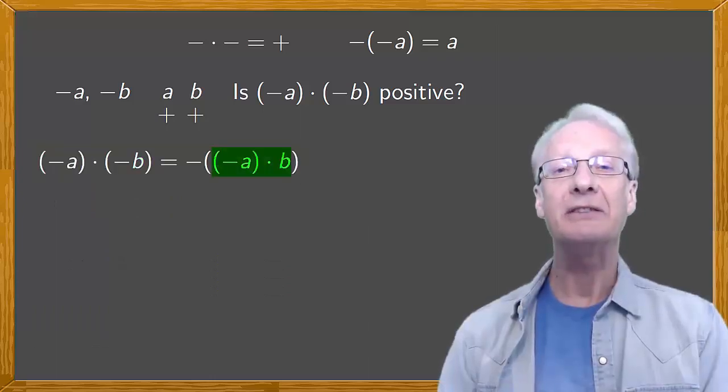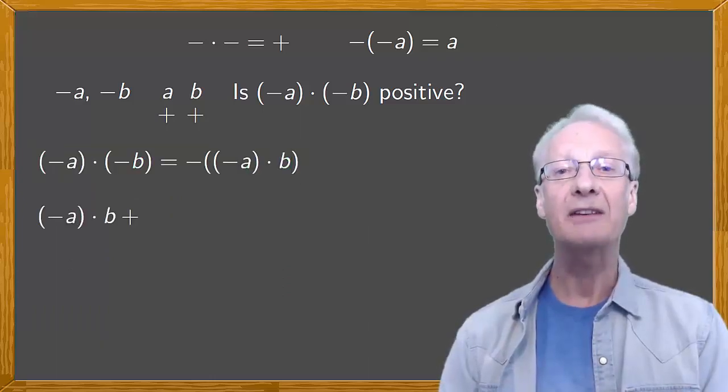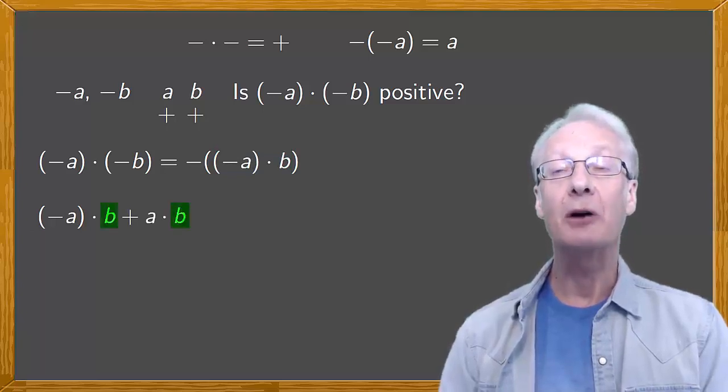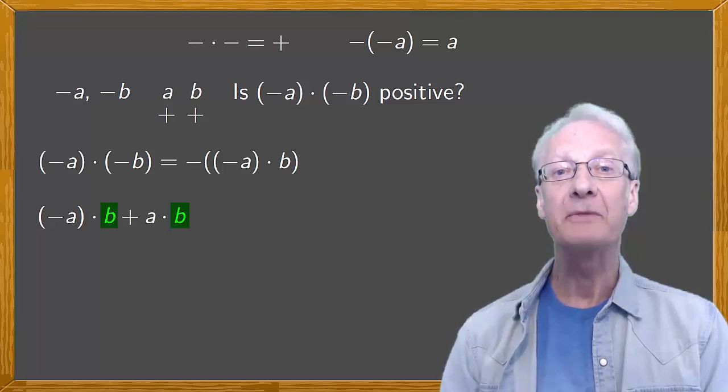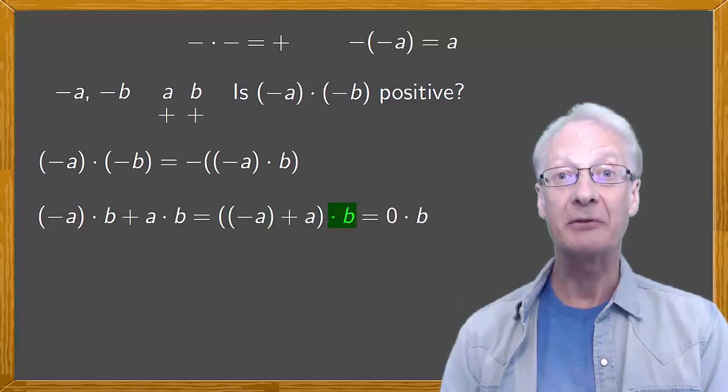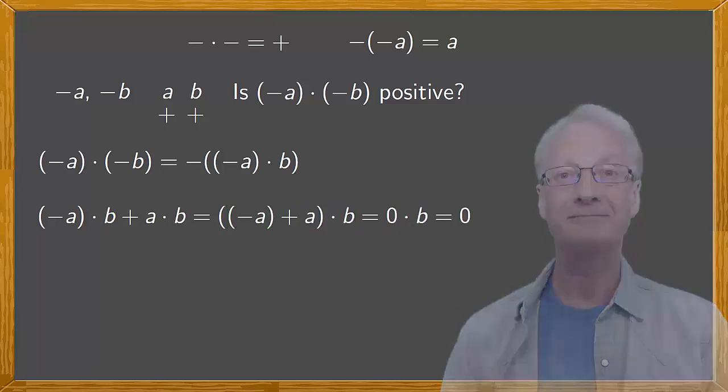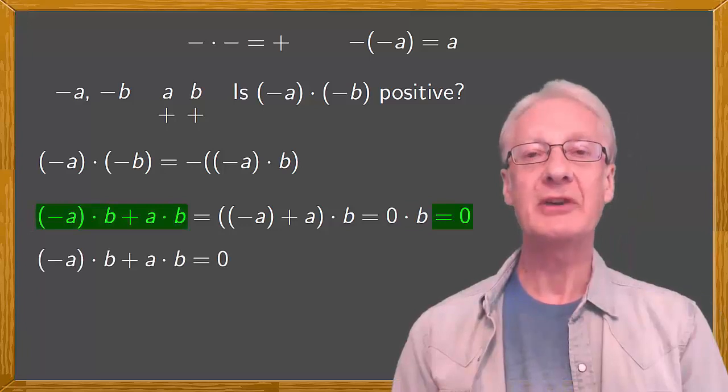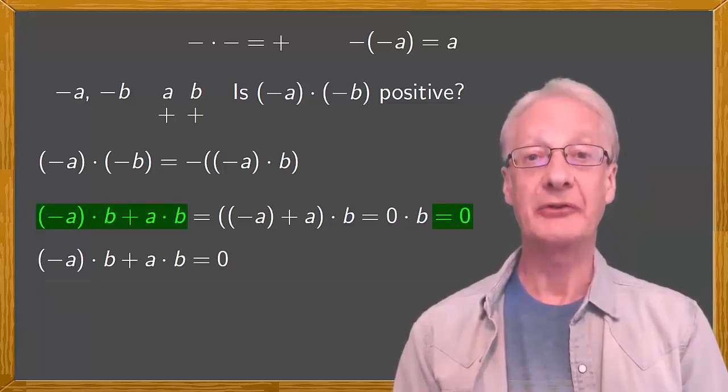Now look at this negative a times b and add to it a times b. Pulling out the common factor b gives negative a plus a times b, which is zero times b, which is zero. So, negative a times b plus a times b equals zero.